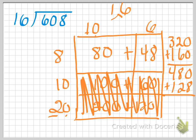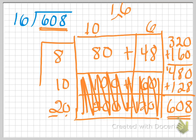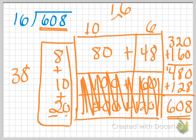Doing some mental math: 0 plus 8 is 8, 8 plus 2 is 10, 4 plus 1 is 5, plus one more is 6 — that's 608. That's the same as our dividend. So now I know this must be the quotient: 20 plus 10 plus 8 equals 38. 38 is our answer.